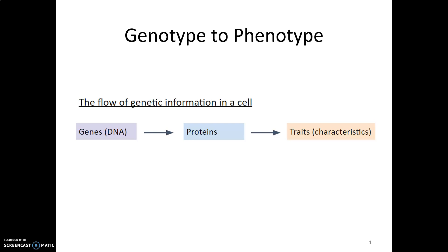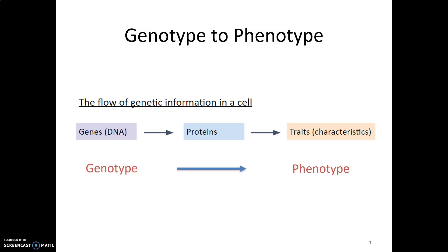Welcome to this lecture on genotype to phenotype. We've been exploring this idea that genetic information inside of a cell flows from genes to proteins to traits. We've been focused on how proteins can determine the traits of an organism. Today we're going to zoom out a little bit and look at how genes connect to proteins, connected to traits — in other words, how information goes from genotype to phenotype.